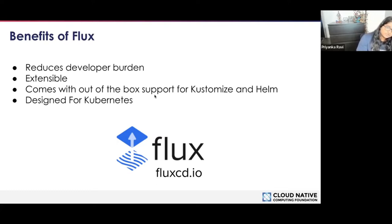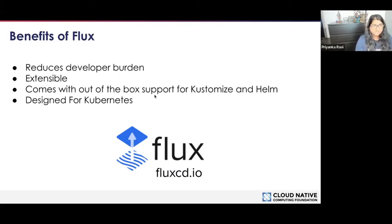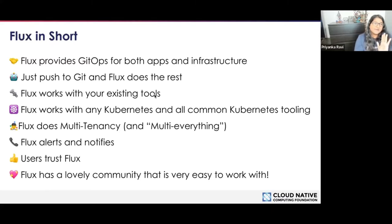Basically, Flux is a modular natural extension of Kubernetes. Because of the microservice architecture that Flux has, you can pick and choose what you actually want to include to tailor your own experience. It comes with out-of-the-box support for Kustomize and Helm, and it's designed entirely to be a natural extension of Kubernetes. These are eight things we'd like you to know about Flux — it's basically Flux in short.